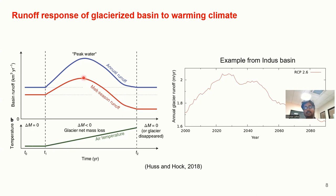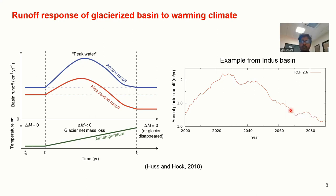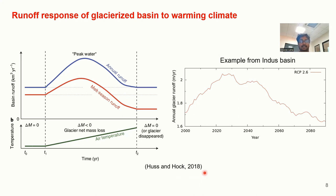This peak water is typically around 2015 for some central Himalayan river basins, although there are large uncertainties regarding peak water timing. The right-hand side plot shows model data of glacier runoff change for the Indus basin — around 2030 there is a peak water, and after that runoff starts decreasing. This is one prediction from the Husson-Huss 2018 Nature paper, and it is one of the key characteristics of a glacier-fed basin.